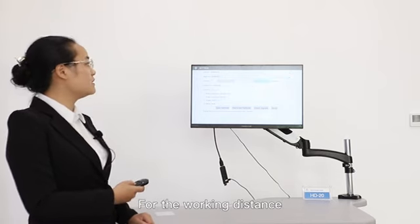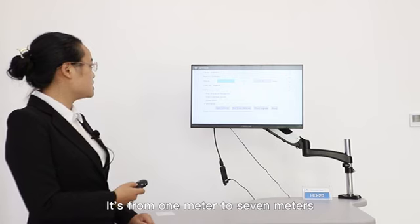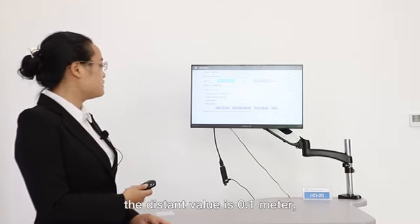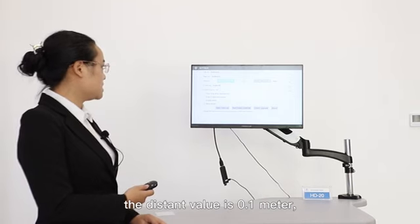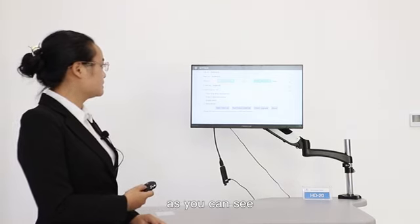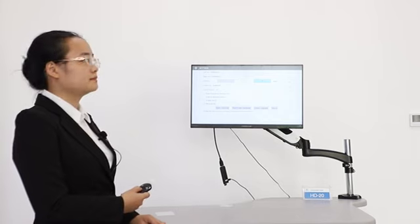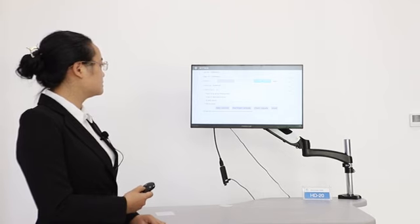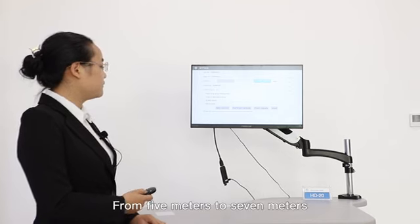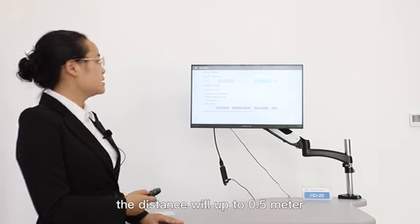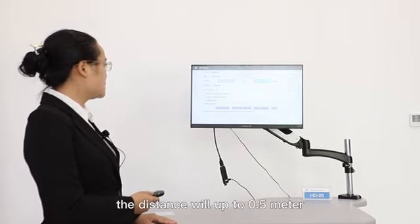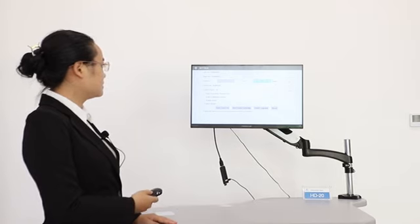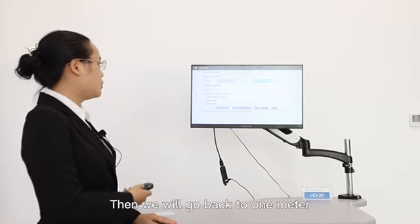For the working distance, it's from one meter to seven meters. From one meter to five meters, the distance value is 0.1 meters. From five meters to seven meters, the distance will up to 0.5 meters. Then it will go back to one meter.